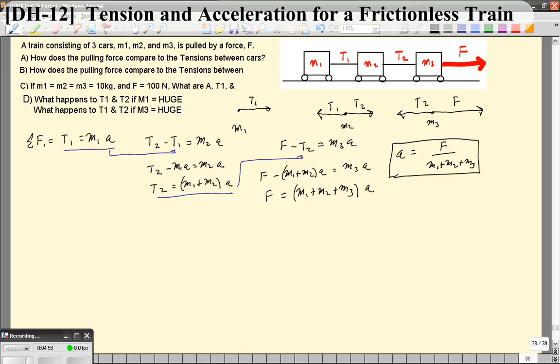Now let's look at the tensions. To do that, I'm simply going to plug this acceleration into tension 1. So tension 1 is going to be M1 times, well, if I factor out the F, you can think of it as M1 over (M1 plus M2 plus M3) times F. And I like to do it this way because you can express the tension as some fraction of the force being applied to the front car.